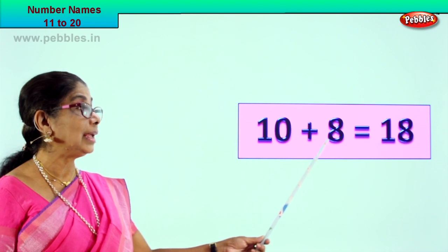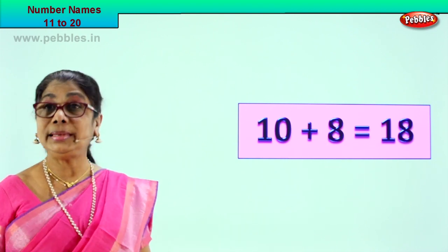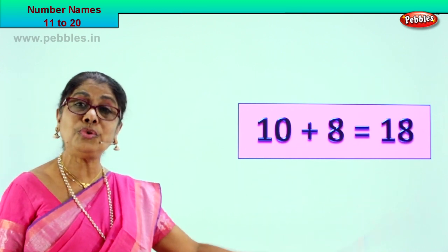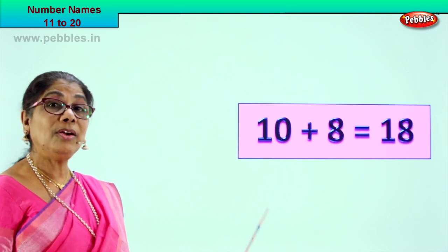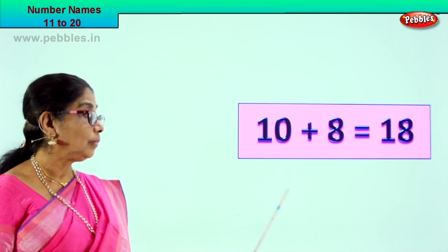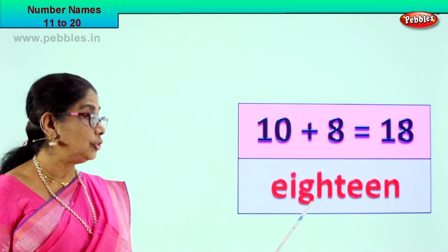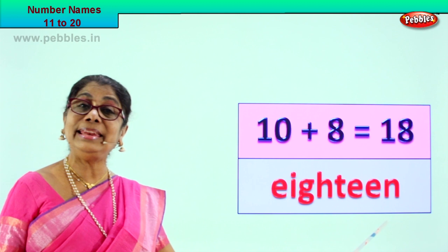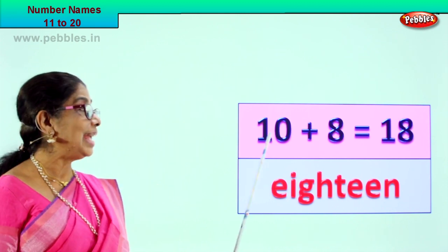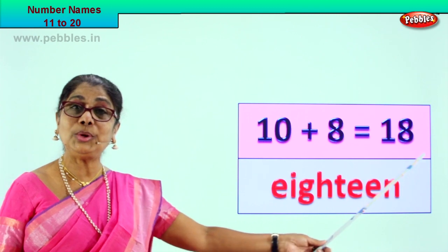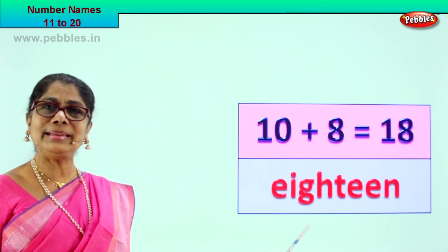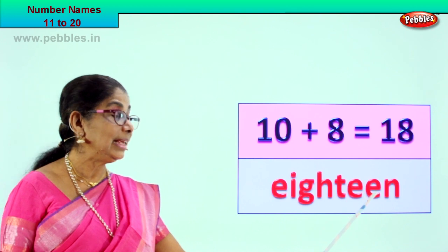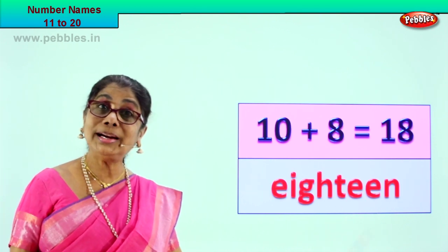10 plus 8 is equal to 18. Read with me — 10 plus 8 is equal to 18. Read it again — 10 plus 8 is equal to 18. How do we write 18 in words? 18 in words — E, I, G, H, T, E, E, N. 18 in words. 10 plus 8 is equal to 18, and then we write it as E, I, G, H, T, E, E, N. 18 in words. Very good!